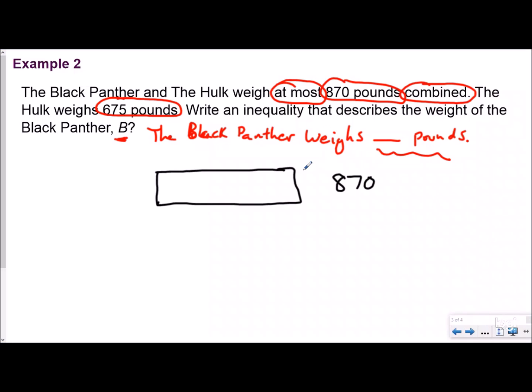And again, this is not exactly because it's an inequality. It's saying at most 870 pounds. That means however much they weigh can be equal to it, but 870 pounds is the most it can be. So it can either be equal to it or less than 870 pounds. We have our Hulk right here, and we already know his weight. That was 675. So we're going to label that H. And we know that our Black Panther, the variable B, and this is where our question mark is. That's what the question's asking us. So we know at most it can be 870, but it can also be less than.